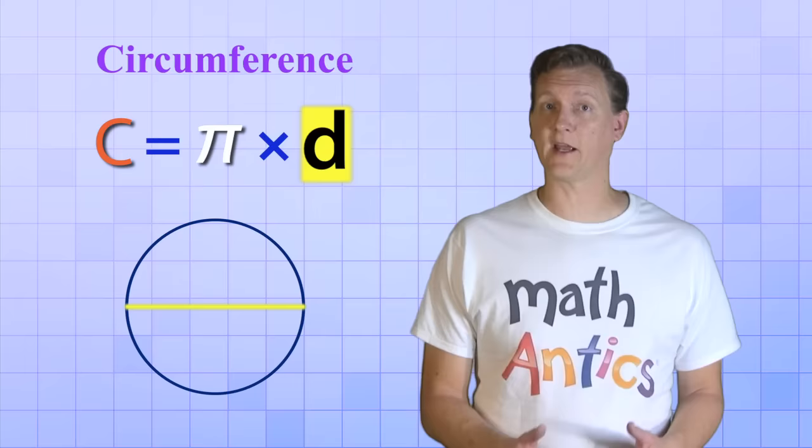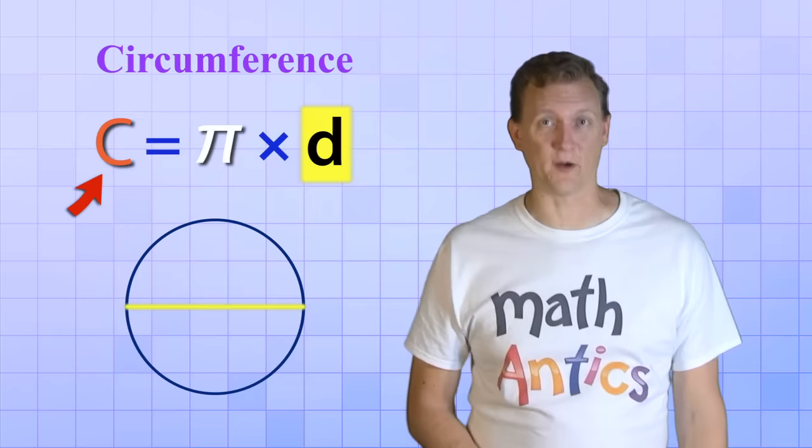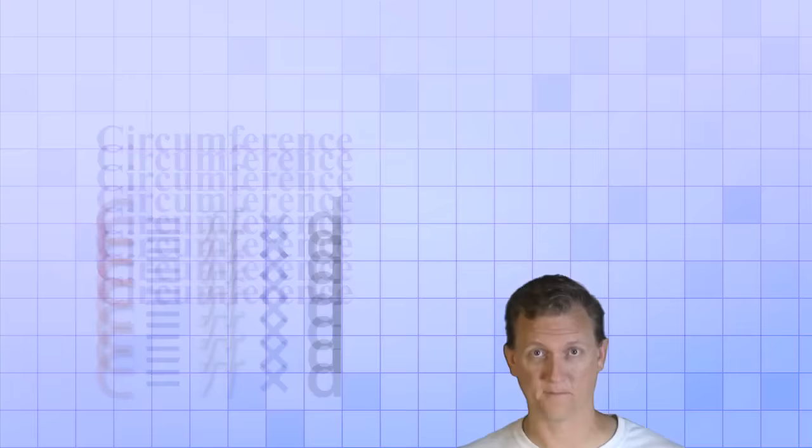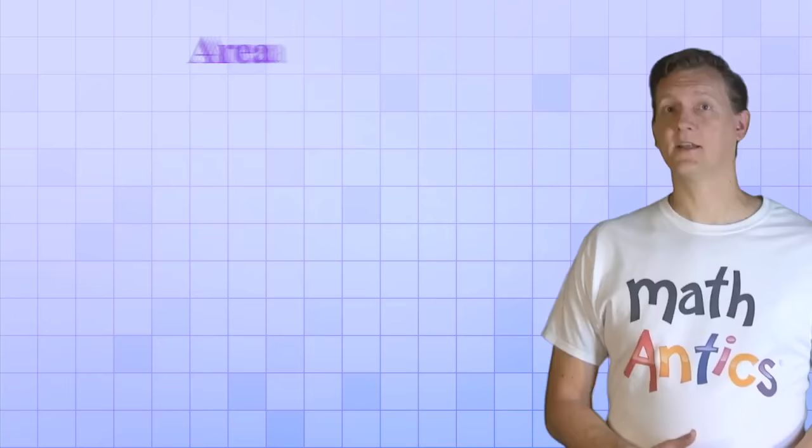So that's a pretty simple formula. It tells us that if we know the diameter of a circle, all we have to do is multiply that diameter times the number Pi, and we'll get the circumference. And we'll try that formula out in a few minutes. But first, let's see the formula for area.